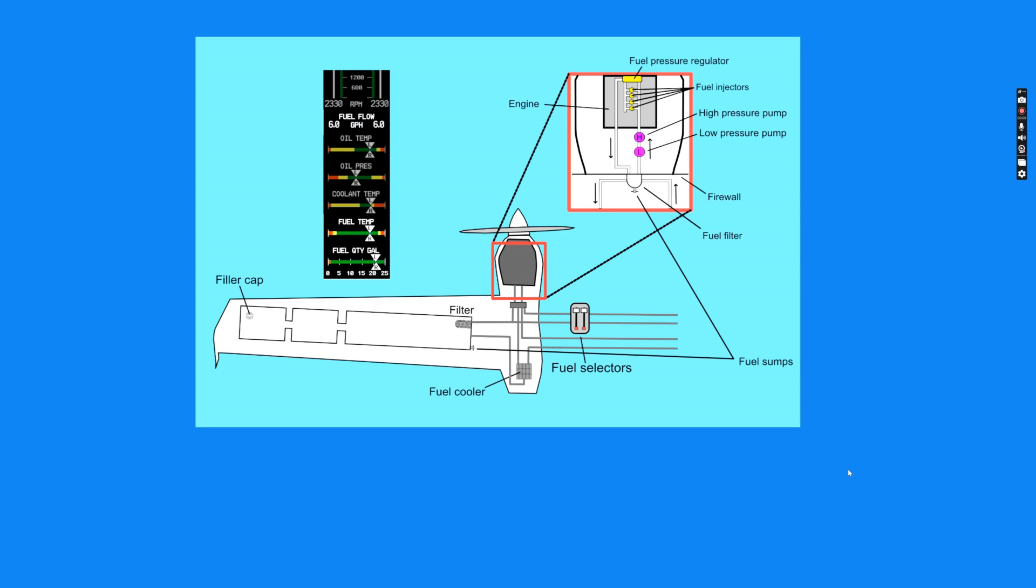The DA42 has two wing tanks, two main wing tanks, that each have a capacity of 25 usable gallons for a total usable capacity of 50.